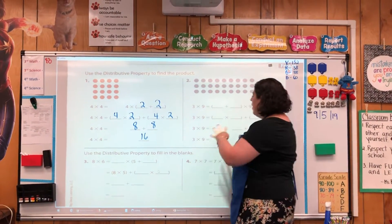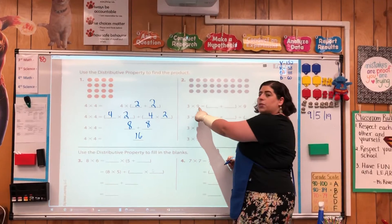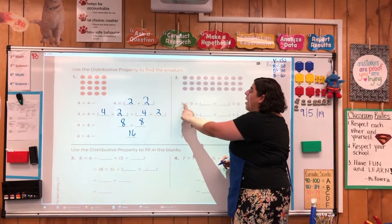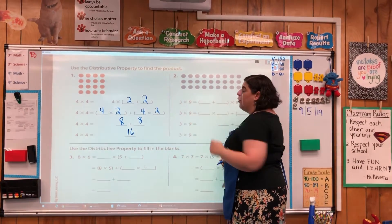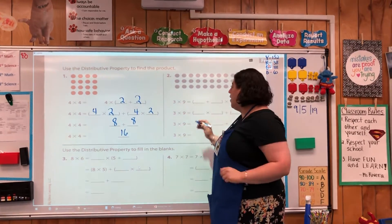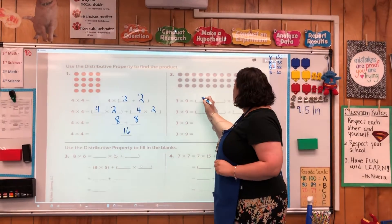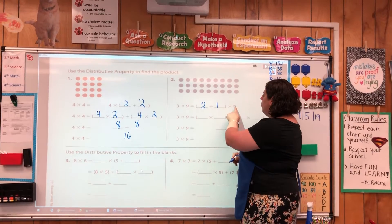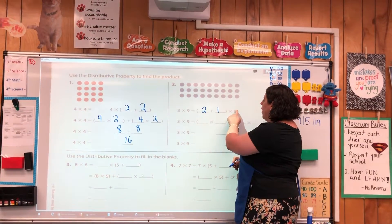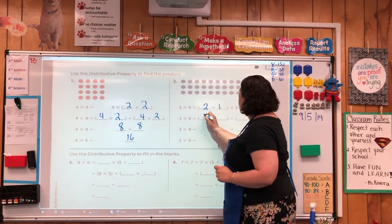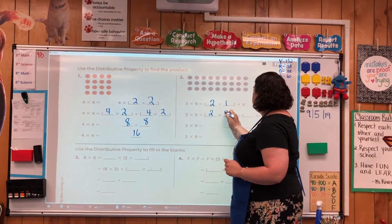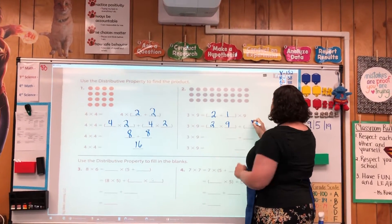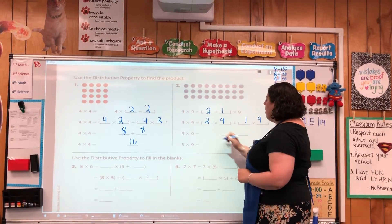I can do the same thing over here, but this time they're not splitting up the 9. The factor 9 is staying the same. I'm splitting up the 3 into two numbers that add up to make 3. I'm going to choose 2 plus 1. So then once again I apply the distributive property, multiplying the 9 times 2 — I can say it as 2 times 9, that way it's the same order — and then 1 times 9 on this side.